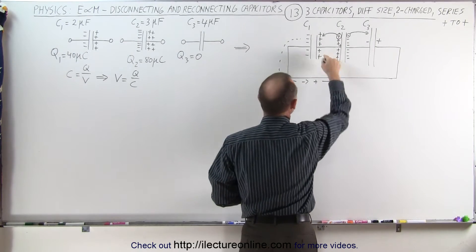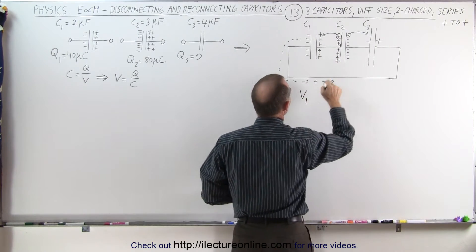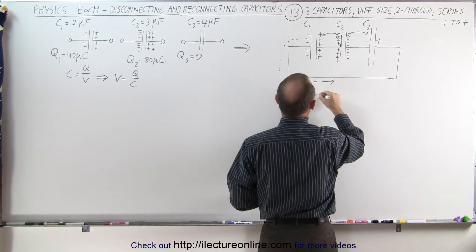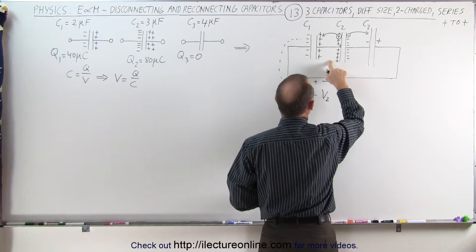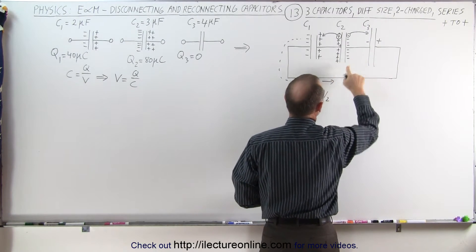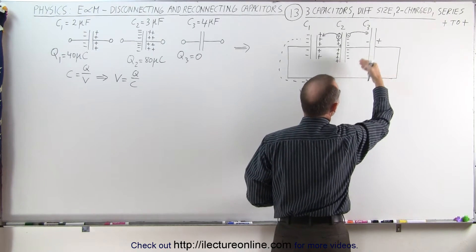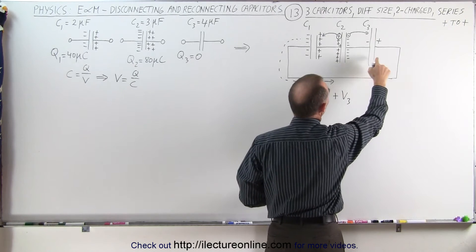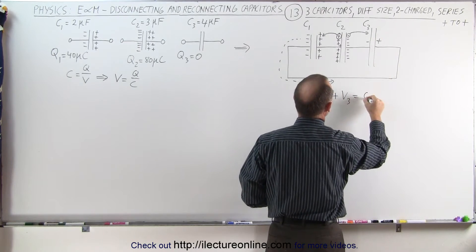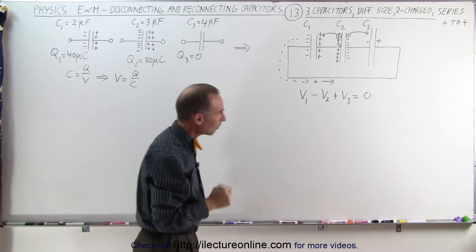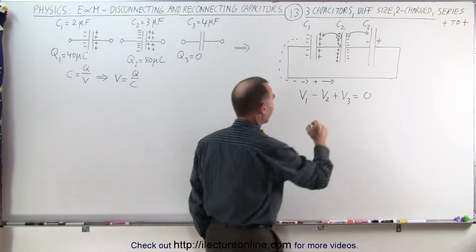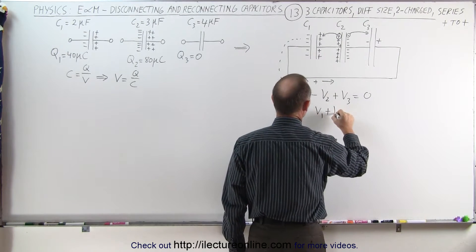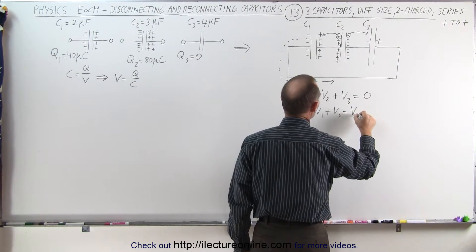So going from here to there, that's a plus V1. From there to there is a minus V2, because we go from the positive end to the negative end to the positive end, and that all must add up to zero. So what we could say here is that V1 plus V3 equals V2.